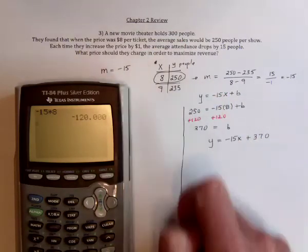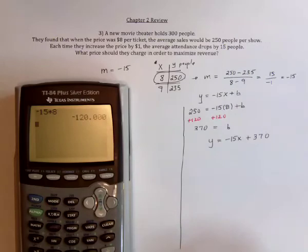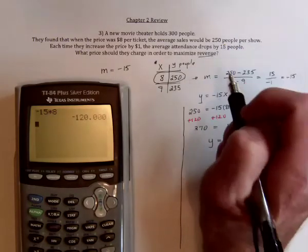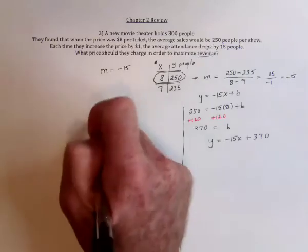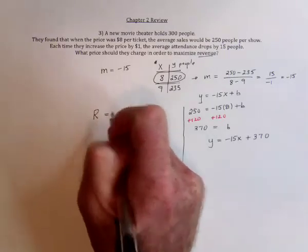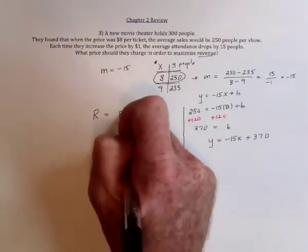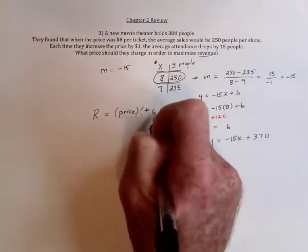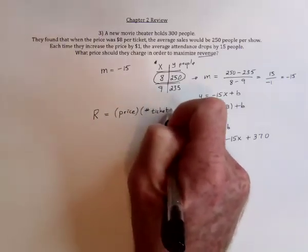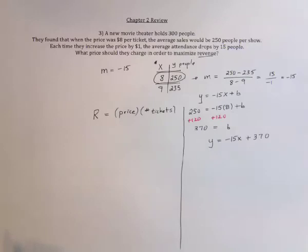But that's really not the question. That was just extra fun. The question was about revenue. Revenue, we now need to create a function. Revenue is equal to the price that you charge times the number of tickets sold. So how much money are you going to get for each ticket, and how many tickets are you going to sell?